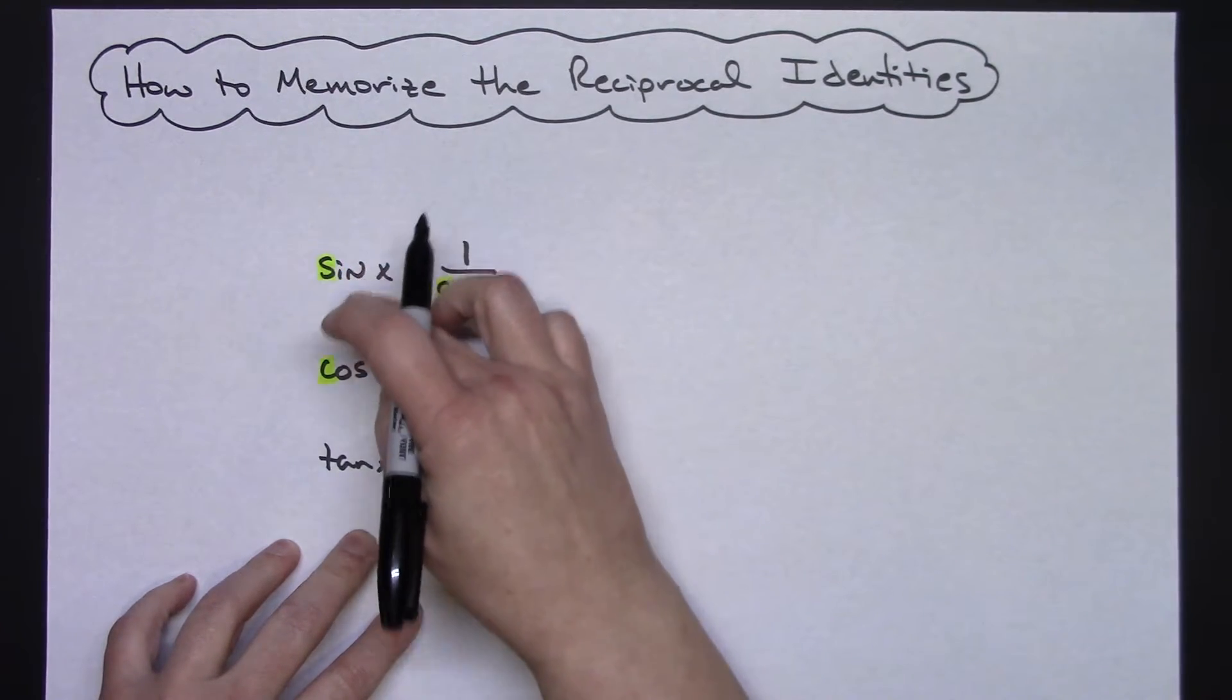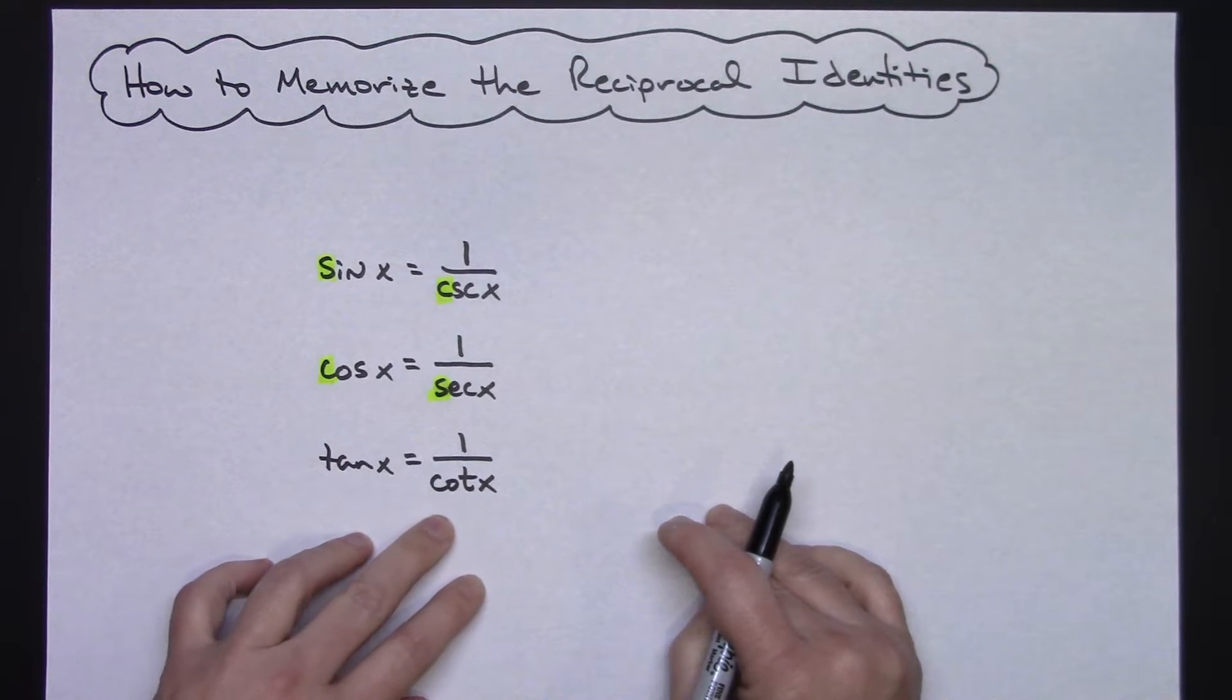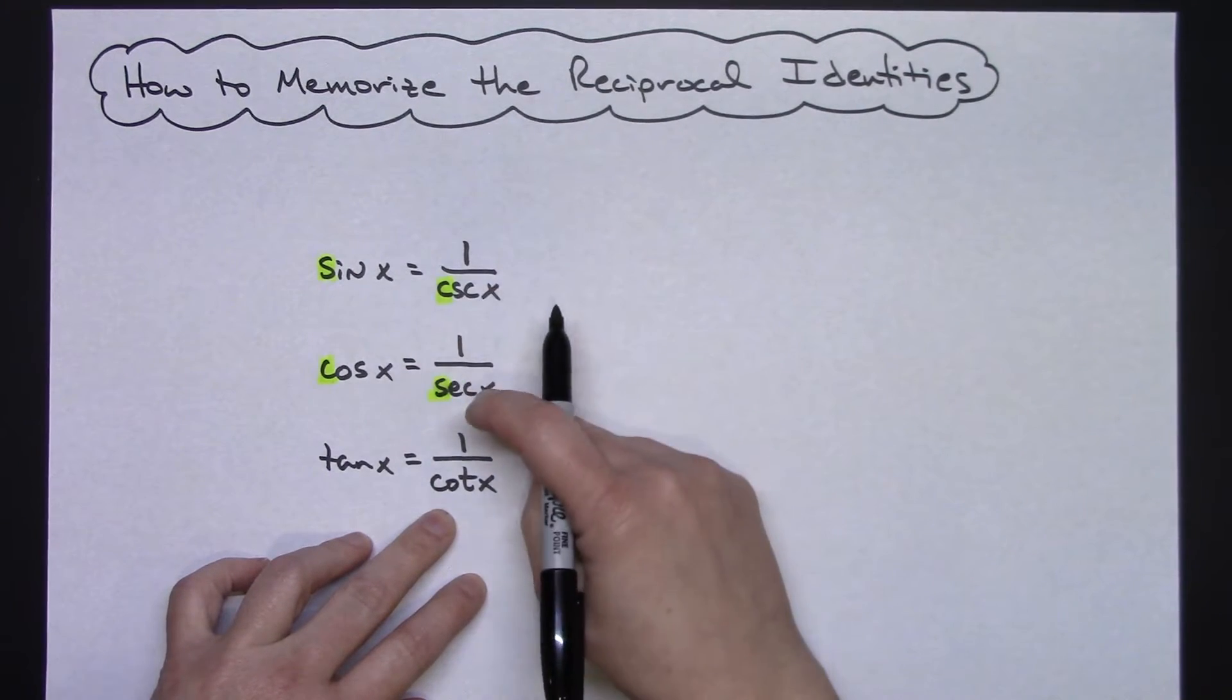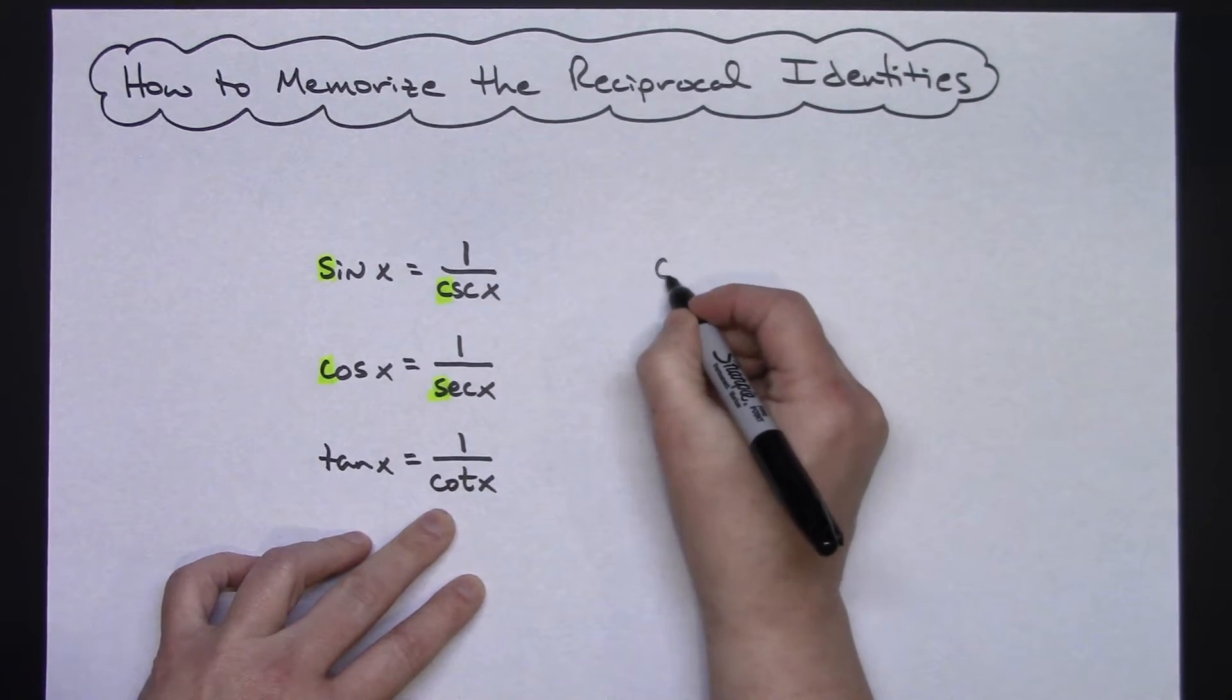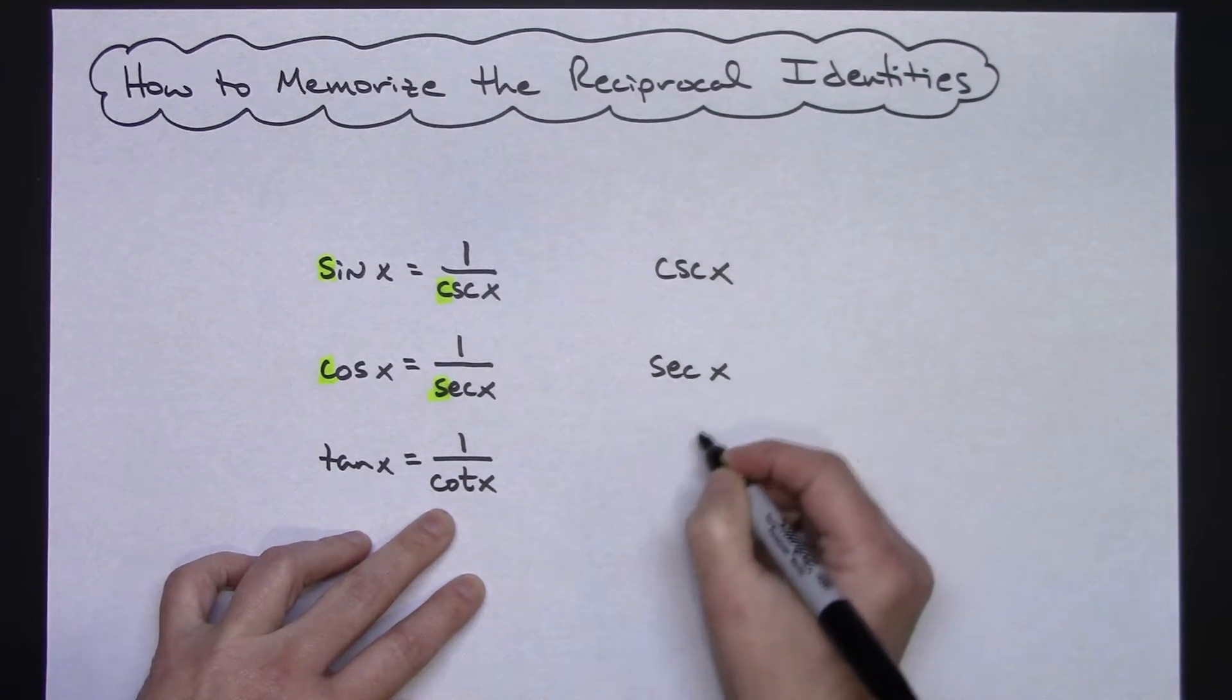Now this is the first three: sine, cosine, tangent. So that means I've got my co-functions I have to do. I write them in the exact same order as the denominators here. So cosecant x, then secant x, then cotangent x.